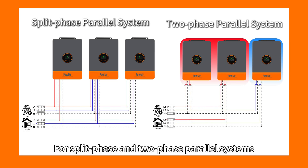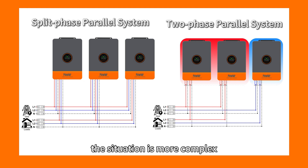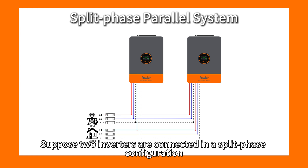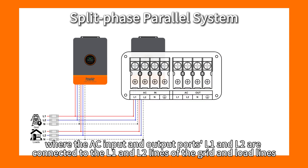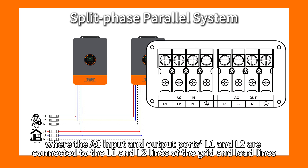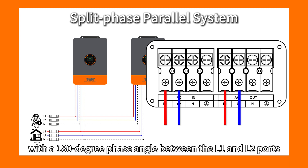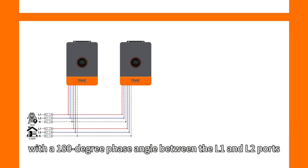For split-phase and two-phase power systems, the situation is more complex, which is the focus of today's discussion. Suppose two inverters are connected in a split-phase configuration, where the AC input and output ports L1 and L2 are connected to the L1 and L2 lines of the grid and load panel, with a 180-degree phase angle between L1 and L2 ports.